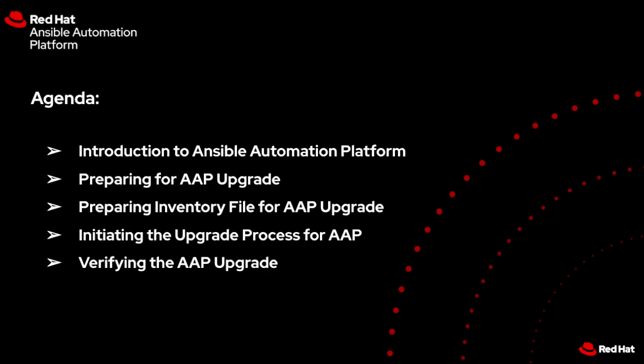Before the upgrade journey begins, we need to prepare for the AAP upgrade. There are rituals to follow: check system requirements, take a backup, and dive into the release notes. Preparing a well-organized inventory file is the backbone of success — group your hosts and define variables. It's like a well-orchestrated dance.